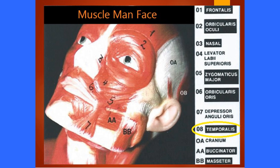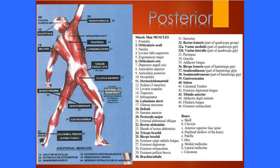Number eight is auricularis superior, a vestigial muscle. Some people can control it to wiggle their ears. On other animals this muscle turns the ears to hear better, but humans turn their heads instead to identify sound direction. Auricularis posterior is found behind the ear.